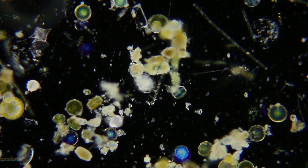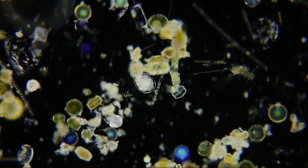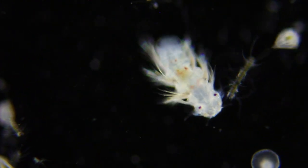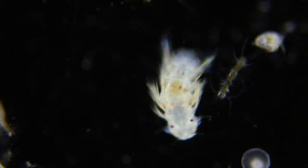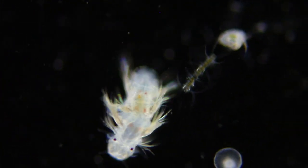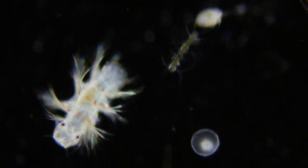The phytoplankton are the plant-like plankton that many of the zooplankton feed on. Highlights in the zooplankton this week include this polychaete worm larva. Notice the segments and bristles.